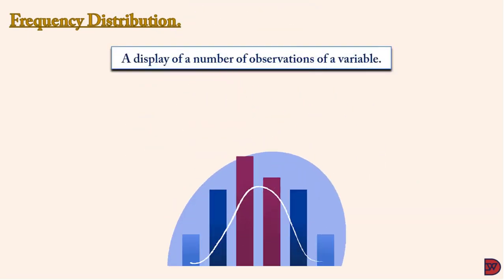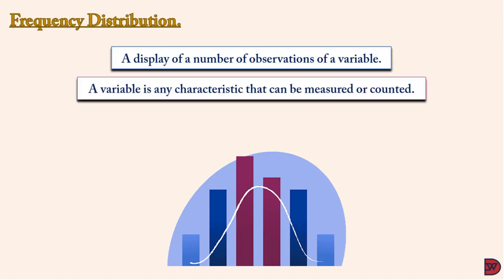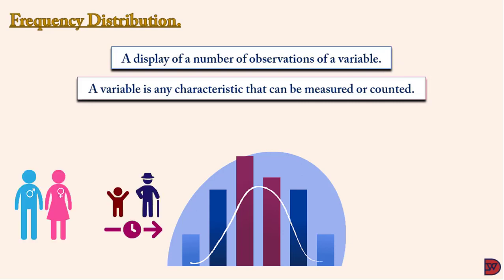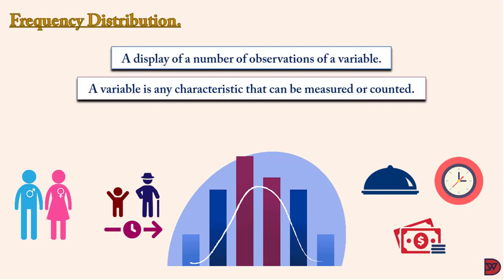A frequency distribution is a visual display of the frequency of a variable. A variable is any feature, number, or quantity that can be measured or counted. A variable may also be called a data item. We can talk about age, gender, restaurant orders, time, income, expenditure, etc. Let's look at the types of variables used in frequency distributions.